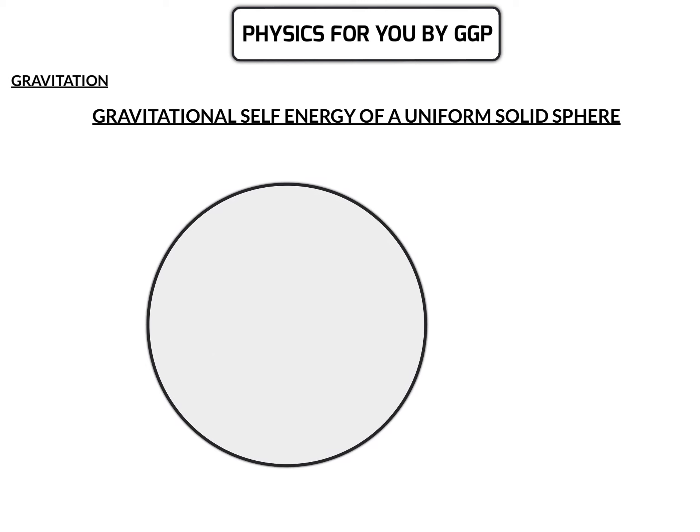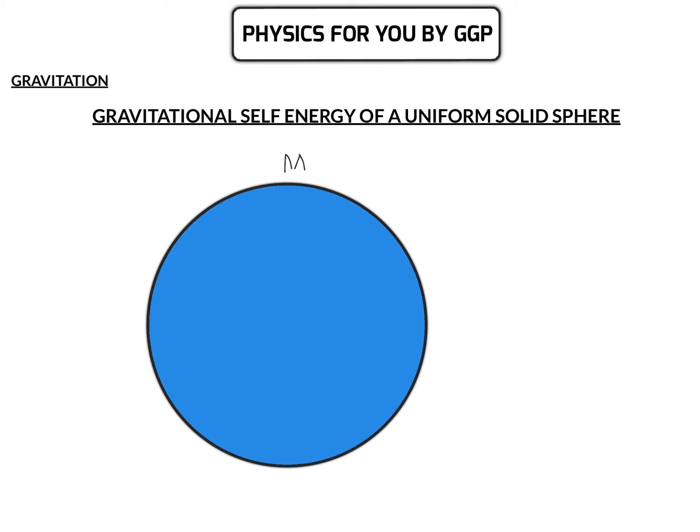Welcome all to the next topic of gravitation, in which we will discuss the gravitational self-energy of a uniform solid sphere. We are considering a solid sphere of mass M and radius R. In the previous case we discussed the hollow sphere, and now we will use the same method to find the self-energy of a solid sphere of mass M and radius R.